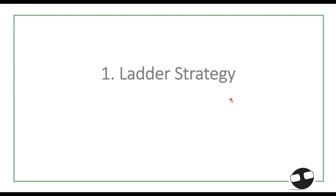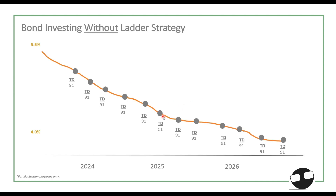The ladder strategy is applicable if you are a bond investor or fixed income investor. Since we are expecting decreasing interest rates from 2024 to 2026 — because of easing inflation in the US and globally — and the hawkish policy rates of central banks across the world could have already reached their peak, this strategy becomes very relevant.